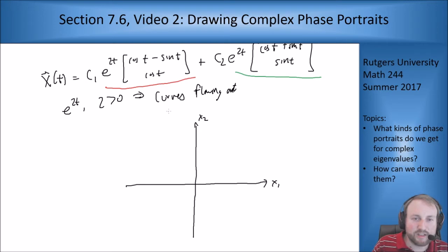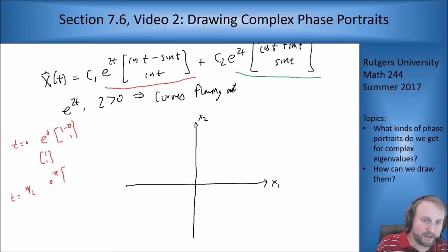So at t equals 0, where is the red curve? At t equals 0, the red curve is at e to the 0 times [1 - 0, 1], so it's at (1, 1). And then at t equals pi over 2, we're at e to the pi times [0 - 1, 0], so we're at e to the pi times (-1, 0). So at t equals 0, we're at (1, 1).